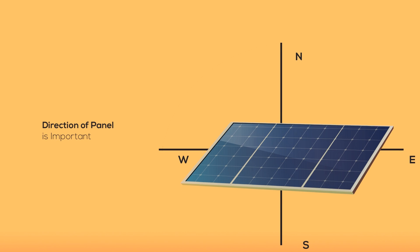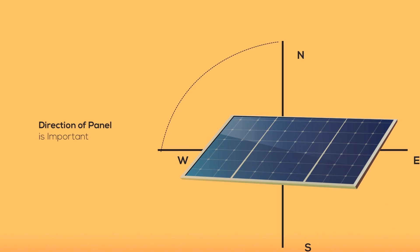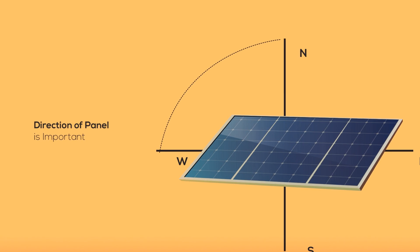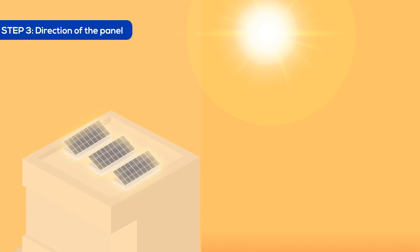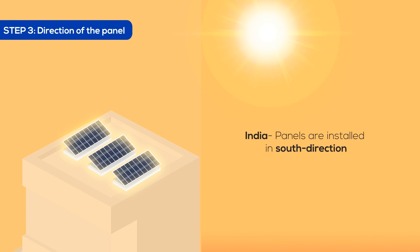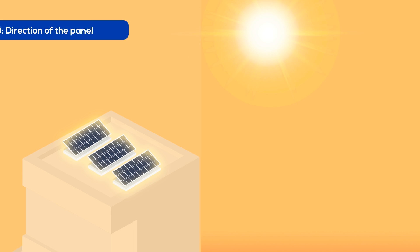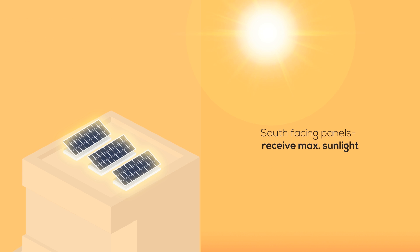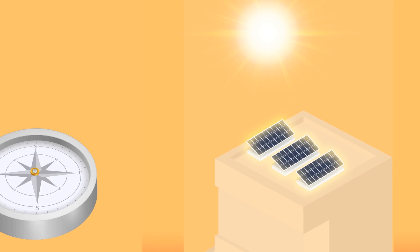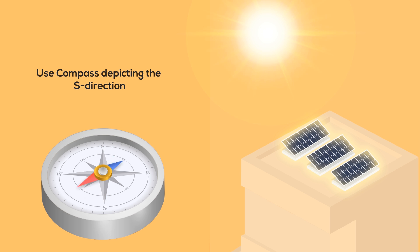Direction of panel is important. Since India lies in the northern hemisphere, the south direction for your panels works best. South-facing panels receive maximum sunlight. A compass comes in handy in this case.